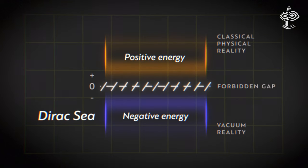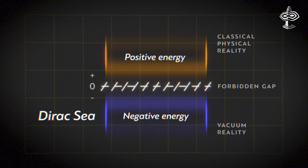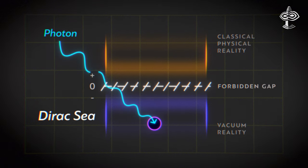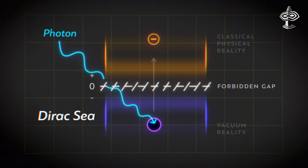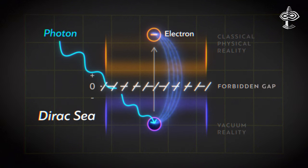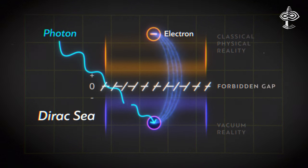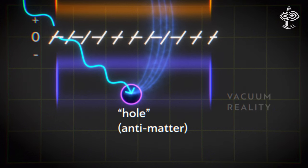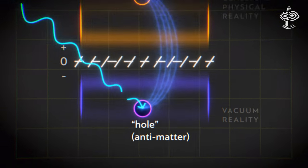Dirac's idea was that if you hit the sea of invisible energy with a strong enough burst of light, an electromagnetic photon, you could knock an electron into the world we can see, materializing it. When the electron gets pushed out, it leaves behind a hole in this invisible energy sea. This hole behaves like the opposite of the electron, which we call antimatter.